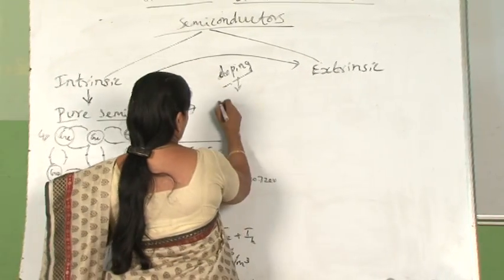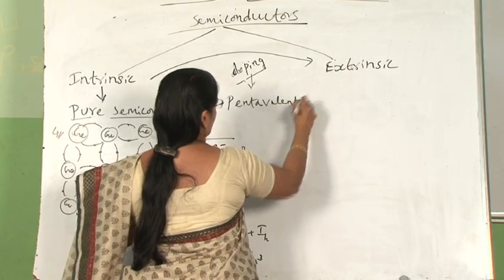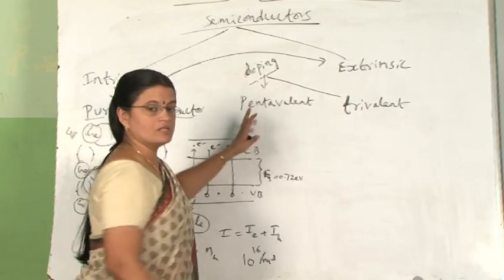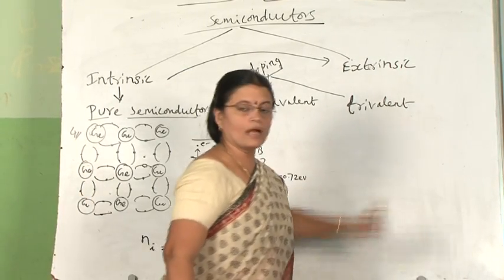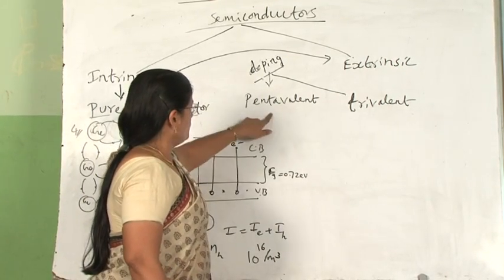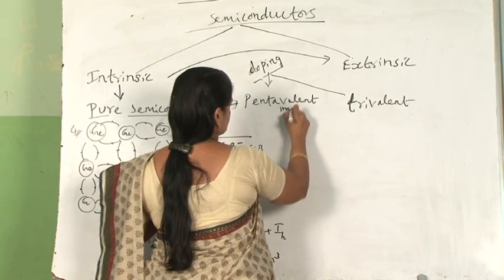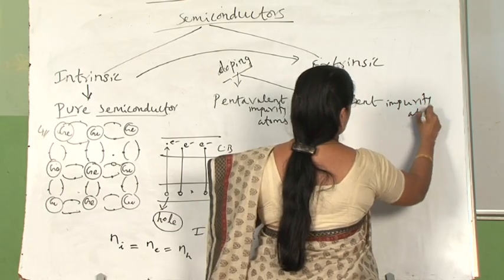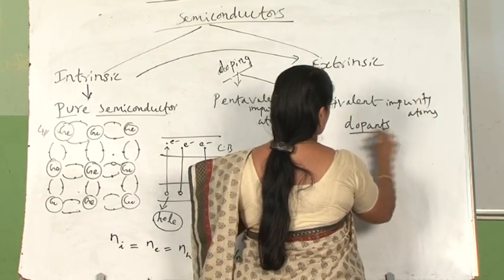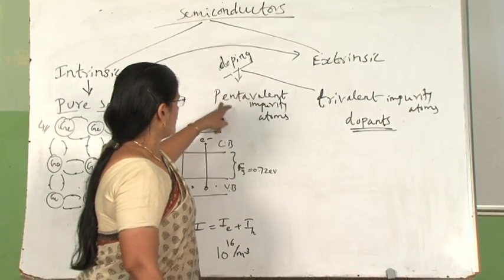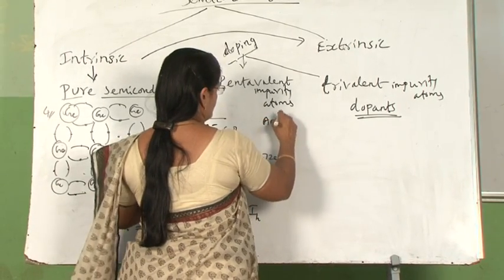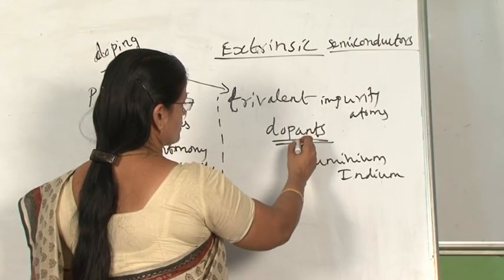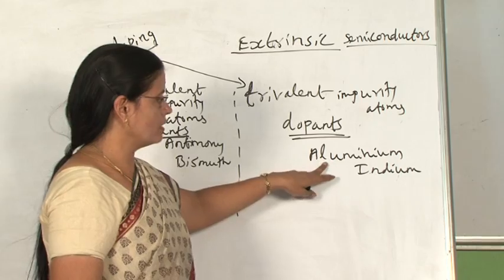Doping is done by adding either pentavalent impurity atoms, which have 5 valence electrons, or trivalent impurity atoms, which have 3 valence electrons. Both are called dopants. Examples of pentavalent dopants include antimony, bismuth, and arsenic. Examples of trivalent impurity atoms include aluminium and indium.